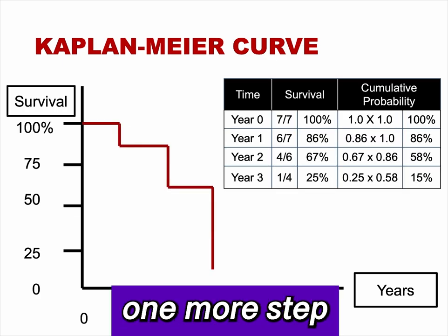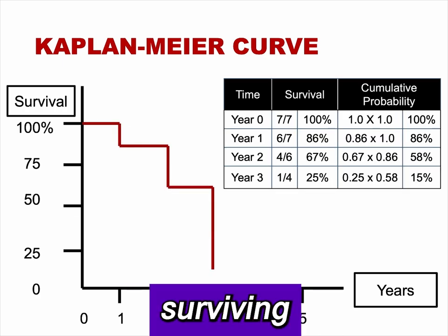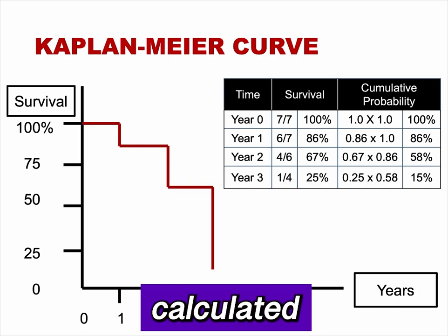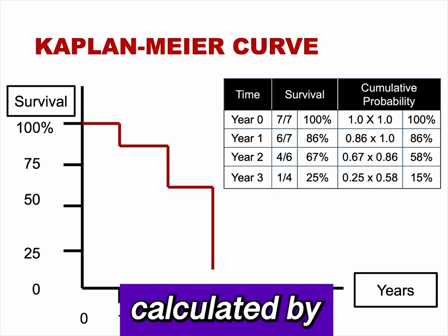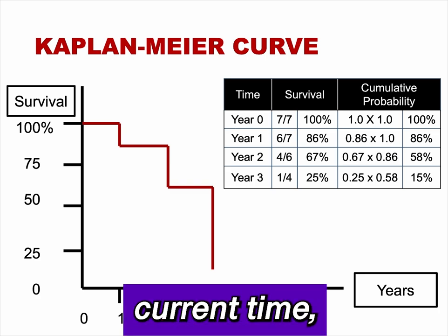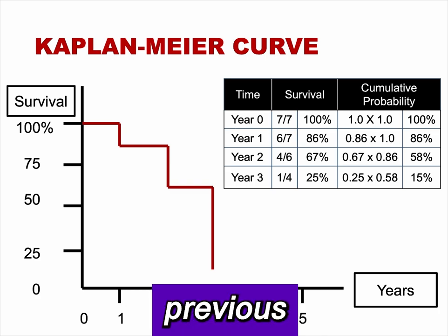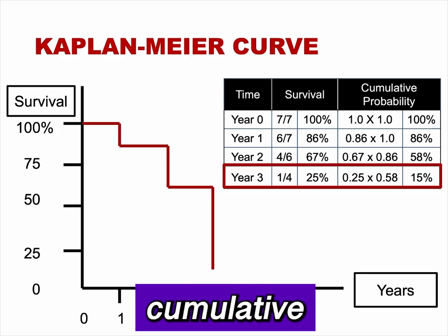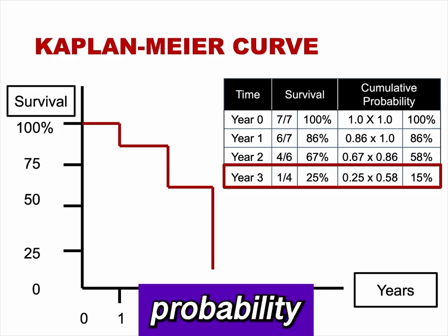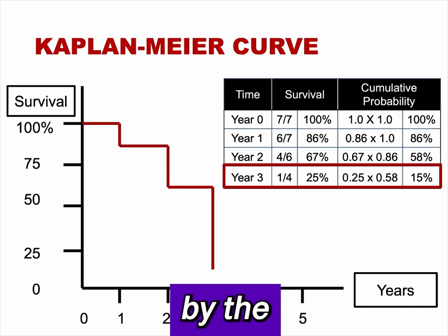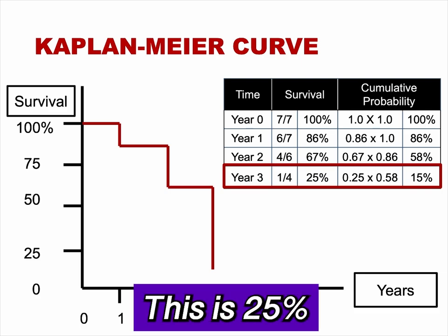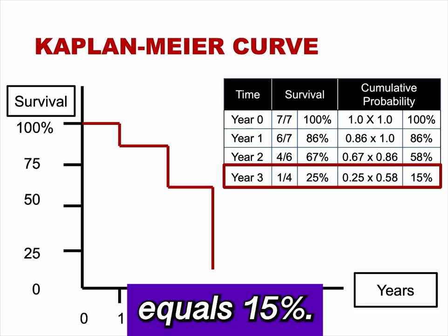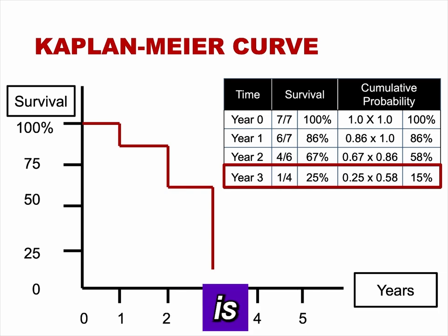However, there is one more step before we can plot the curve. The percent surviving is not the absolute probability of surviving that we just calculated. It is the cumulative probability of surviving each of the preceding time intervals. It is calculated by multiplying the probability of surviving at the current time with the cumulative probability of surviving to the previous time. For example, the cumulative probability of survival at year 3 is the probability of survival at year 3 multiplied by the cumulative probability of survival at year 2. This is 25% times 58%, which equals 15%.